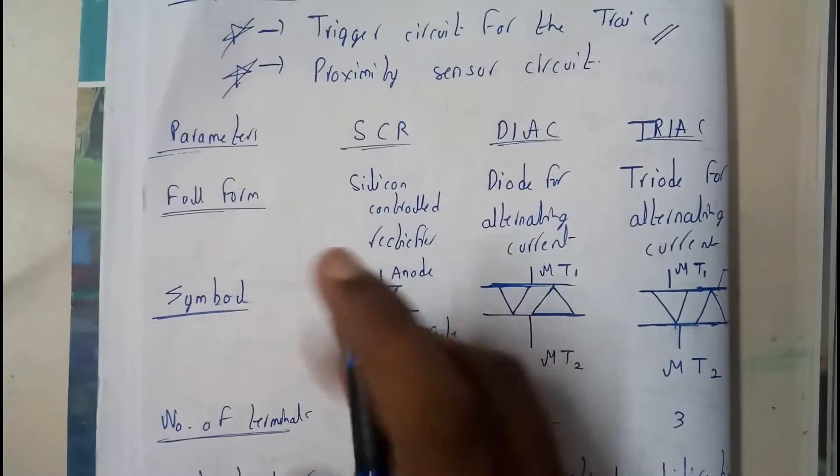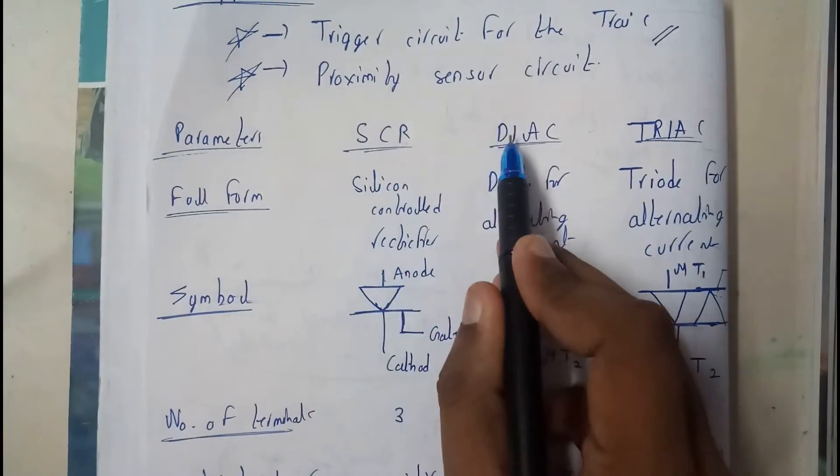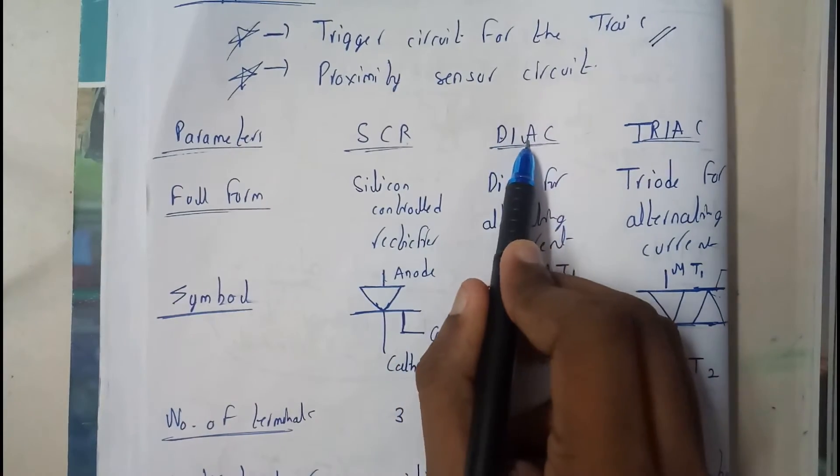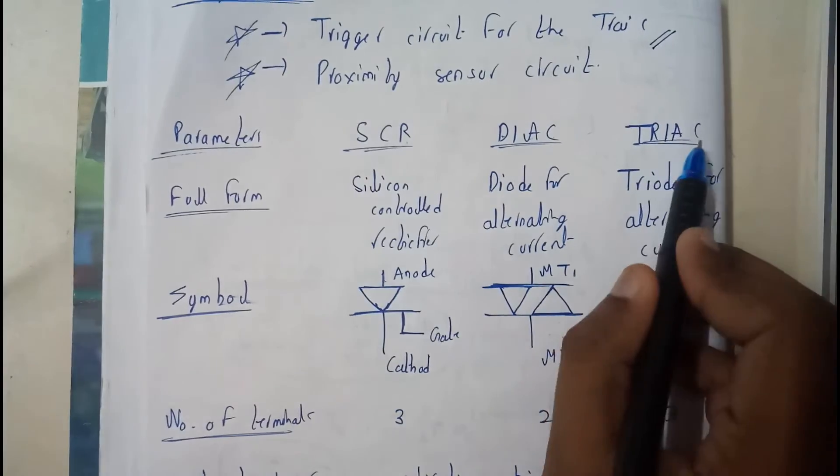Let's go through the differences. The full form of SCR is Silicon Controlled Rectifier, DIAC is Diode for Alternating Current, and TRIAC is Triode for Alternating Current.